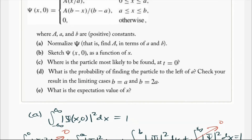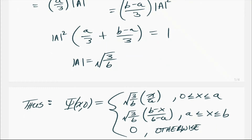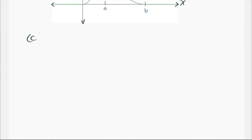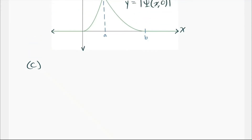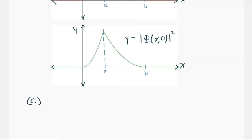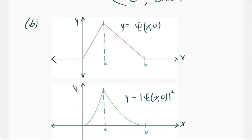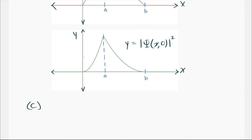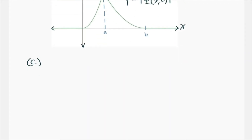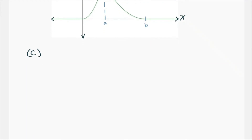Part C asks where the particle is most likely to be found at t equals 0. The Born interpretation says that psi(x, 0) squared gives the probability. Looking at the graph of psi squared, the highest probability corresponds to x equals a. So at t equals 0, the most probable x value is equal to a.